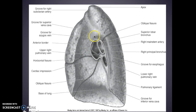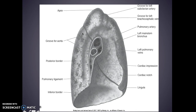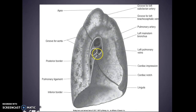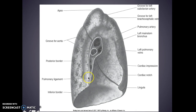Here's a groove for your azygous vein, and then your groove for your superior vena cava on the other side. For your left lobe: here is your apex, groove for your left subclavian, groove for your brachiocephalic vein, your pulmonary artery, left pulmonary veins, and your left main stem bronchus — cardiac compression here with your cardiac notch, your lingula, your inferior border, pulmonary ligament coming down.